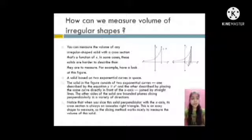The solid in the figure consists of two exponential curves. One described by the equation y equals e raised to x and the other described by placing the same curve directly in front of the x-axis joined by straight lines. Notice that when you slice this solid perpendicular with the x-axis, its cross section is always an isosceles right angle triangle. This is an easy shape to measure, so the slicing method works nicely to measure the volume of the solid.